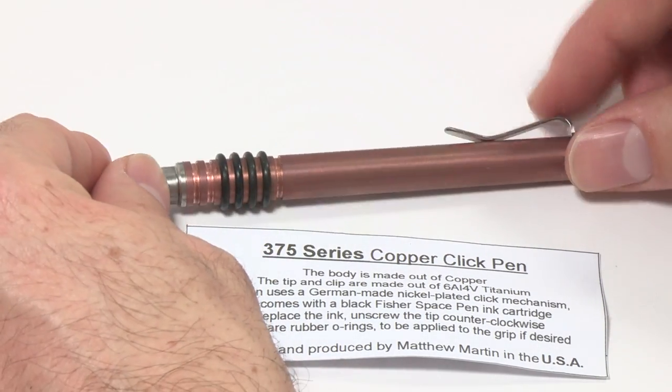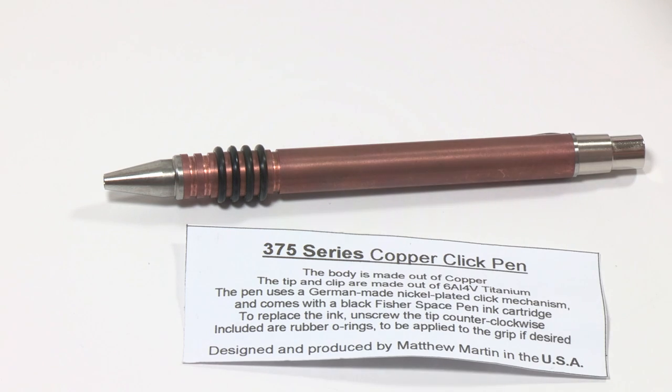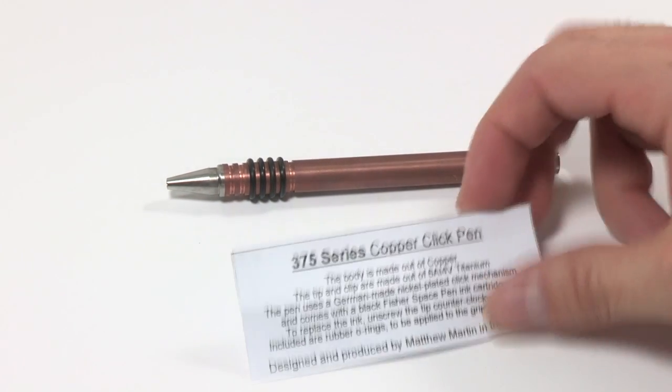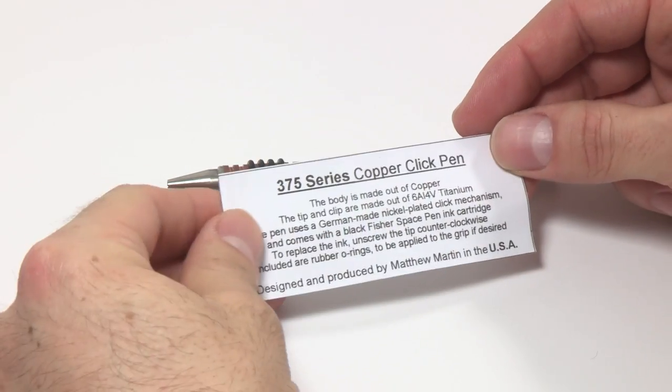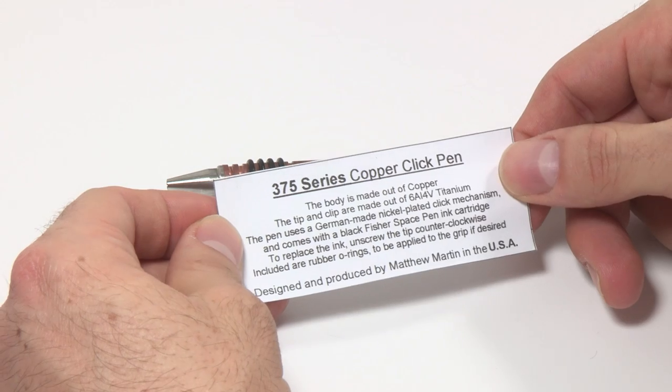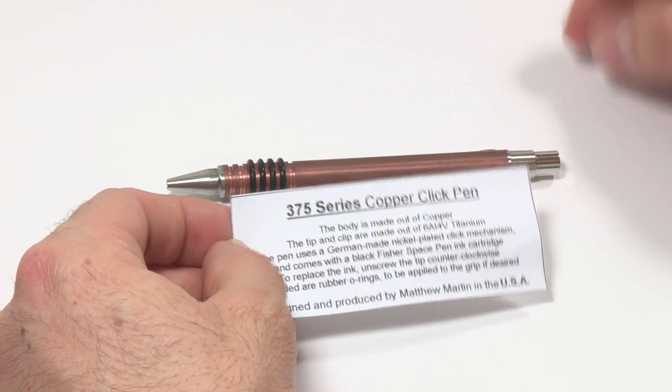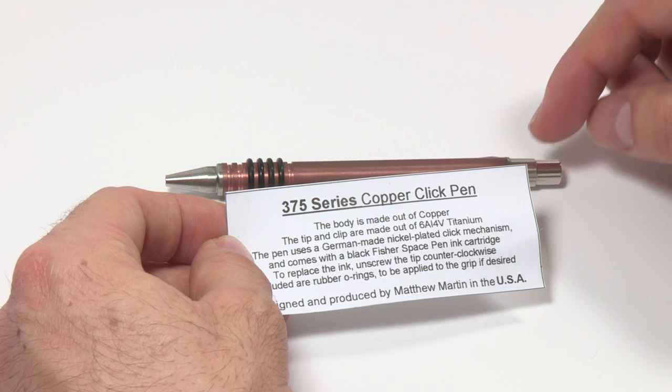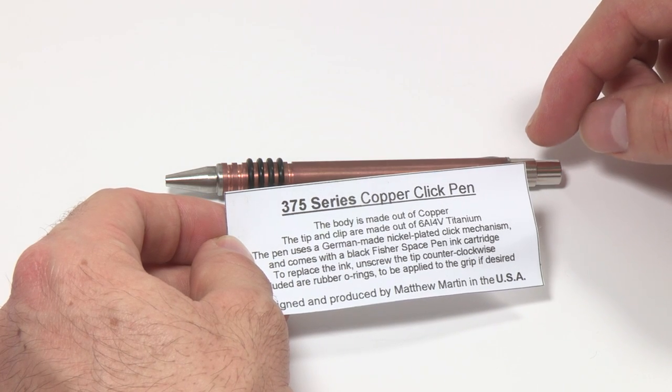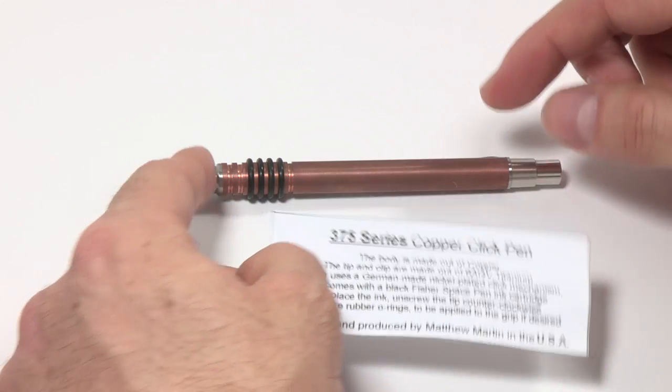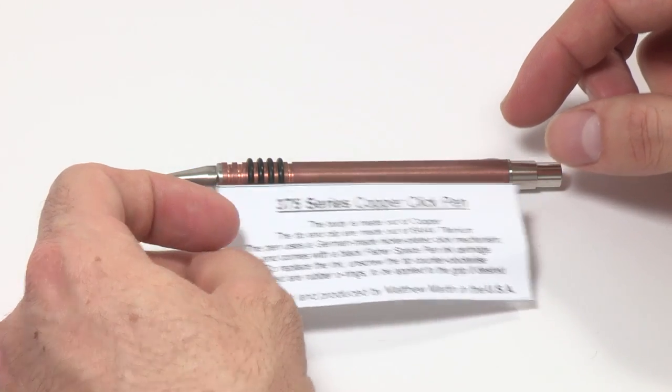This one is actually pretty reasonably priced, $60, and it's a relatively small pen. This one is made of copper, just a little information thing that comes with it. The body is made of copper. The tip is made out of titanium. The Clicky mechanism is the same German Clicky mechanism that every other Clicky pen that I've used has, and I'll show you that. It comes with a Fisher Space Pen refill that you can get to by removing the tip there.